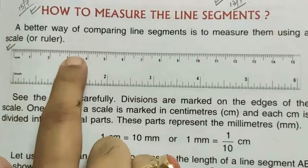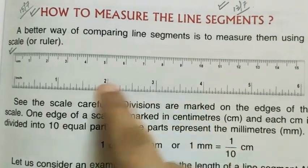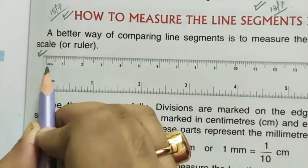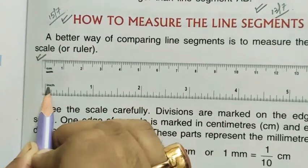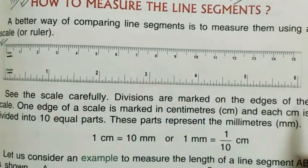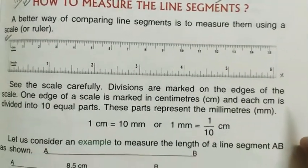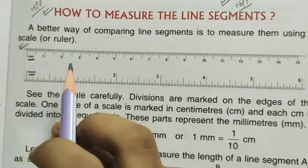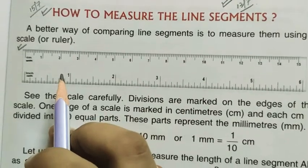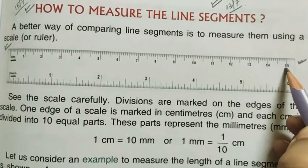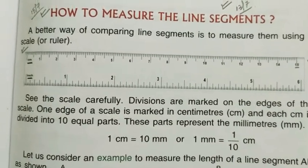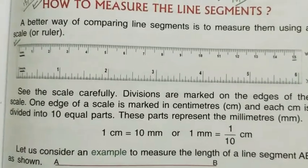There are some divisions marked on the edge of the scale. So one end is marked as centimeter and the other end is marked as inch. Let us just concentrate on the centimeter. Normally different lengths are available: 15 centimeter scale, 30 centimeter scale.